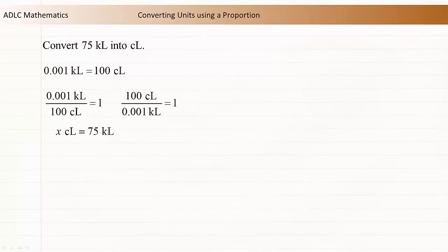Again, because we're trying to use a proportion, we'll rearrange this equation into a fraction equal to 1. To do this, we can divide both sides of the equation by 75. The two 75s on the right are reduced, and x centiliters divided by 75 kiloliters is equal to 1.